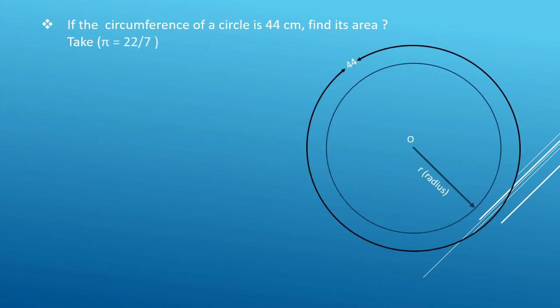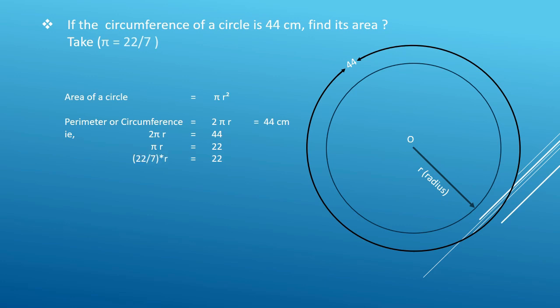If the circumference of a circle is 44 cm, find its area. Using 2πr equals 44, we get πr equals 22. With π equal to 22/7, we get r equals 7 cm. Area of the circle equals πr squared, that is 22/7 multiplied by 7 multiplied by 7, which equals 154 square centimetres.